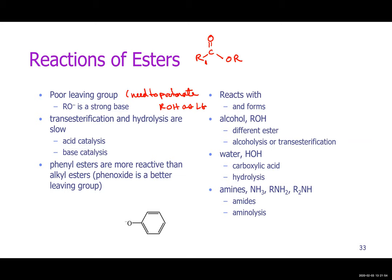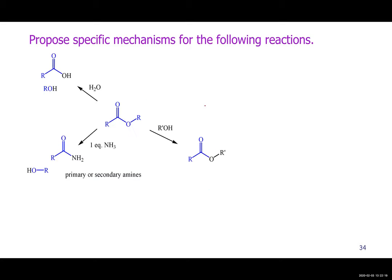The exception to esters where the leaving group is actually pretty good is phenoxide ion. Phenoxide comes from phenol — any of these aromatic alcohols tend to be relatively good leaving groups because of resonance and aromaticity.